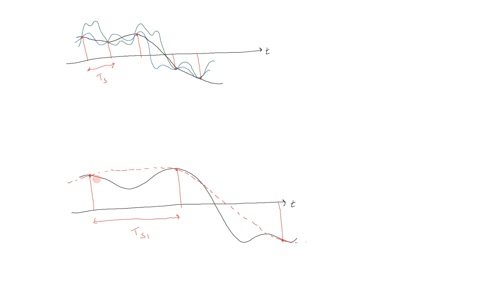However, had we sampled at a faster rate, or a smaller t sub s, suppose we still have this first red one, but then we also sample at these points. Now you can see that, in fact, we capture all of the variations of the signal with this t sub s 2, the smaller sample period, or faster sample rate.